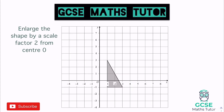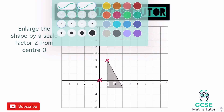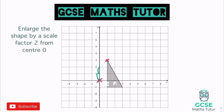The next question also asks to enlarge a shape by a scale factor of two, this time from center zero. Center zero is right here where the x and y axes meet — it can also be called the origin or the coordinate (0,0). I'm going to pick the top point again and think about how to get there: it's one, two, three up and one across.